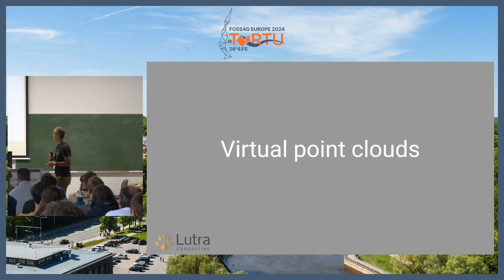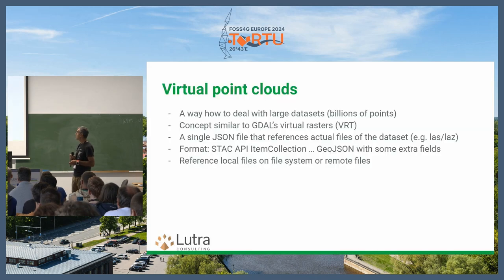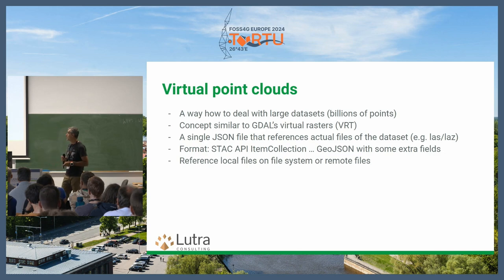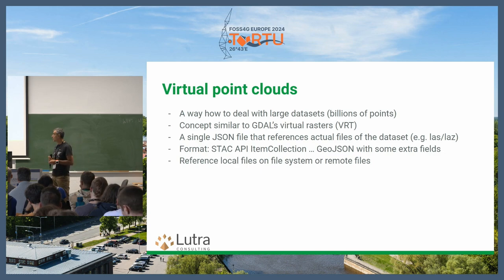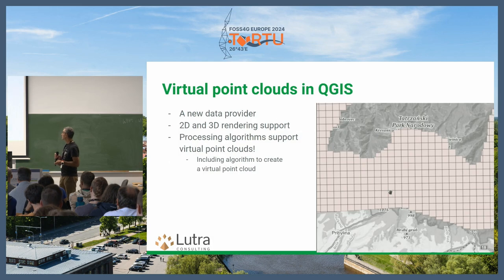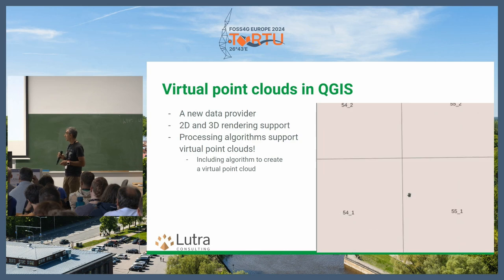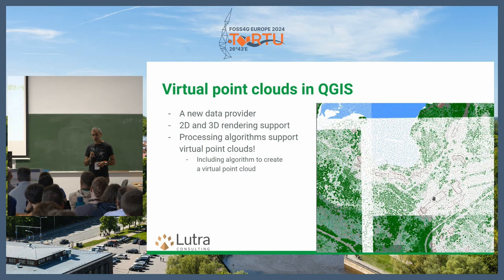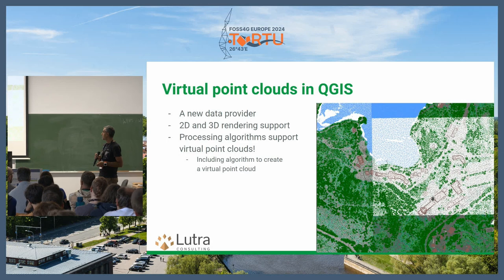Another thing we added for the same QGIS version was Virtual Point Cloud (VPC), which is similar to virtual raster. You wrap several point cloud files in a JSON file, so you don't need to create a physical merge of all your data. It's COPC-compatible, so if you have a COPC-compatible reader it should read the VPC file as well. You can have a large set of COPC files — and it will create COPC if it's not already there — so if you have a LAS or LAZ file and run this algorithm to create your VPC, it indexes it as well.